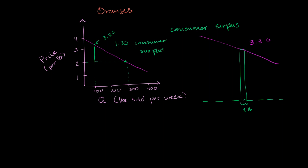So the height of this, the height of this right over here, was $1.30. And so the consumer surplus is $1.30 per pound, times one pound. And so that's where we got the $1.30 consumer surplus.